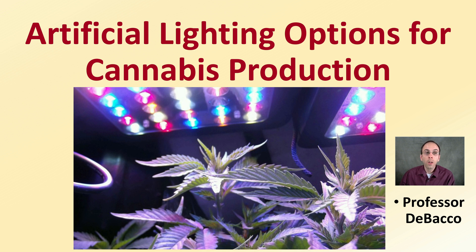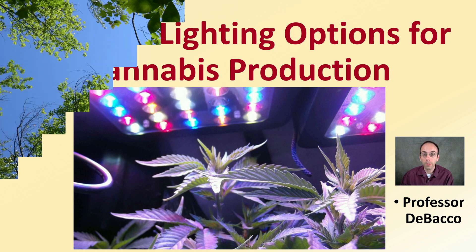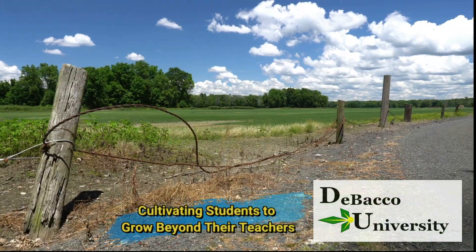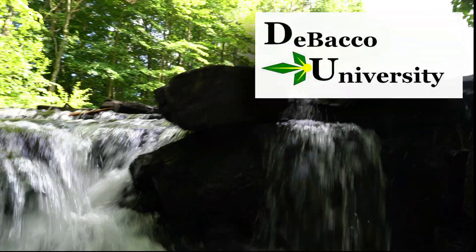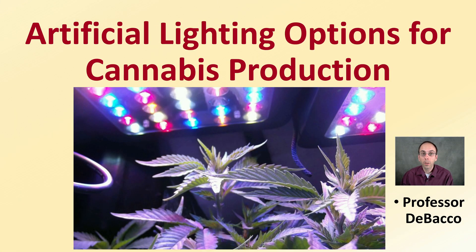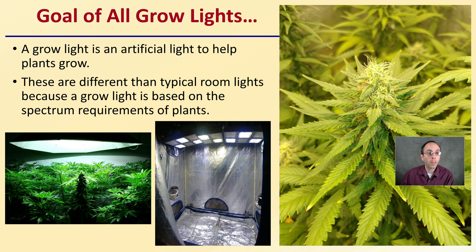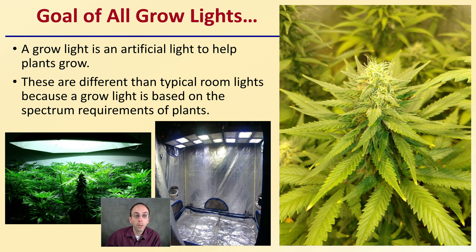In this DeBacco University video, I'm going to go over artificial lighting options for cannabis production and give you some of the pros and cons of some of the common artificial lighting sources that you might be considering. The goal of all grow lights is to help plants grow. They are different from typical room lights because grow lights are based on the spectrum required by plants, producing the specific wavelengths that plants need to utilize.